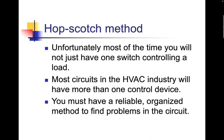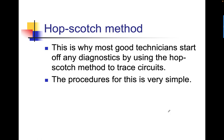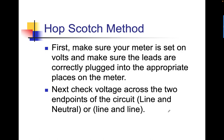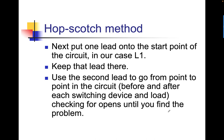Most of the time you'll not just have one switch controlling a load. Most circuits in the HVAC industry have more than one control device. You must have a reliable, organized method to find problems in the circuit. This is why most good technicians start off any diagnostic by using the hopscotch method to trace circuits. The procedure is very simple: make sure your meter is set to volts and the leads are correctly plugged in. Check the voltages across the two endpoints of the circuit — line and neutral, or line and line. Put one meter lead at the start point, in our case L1, and keep it there. Use the second lead to go from point to point in the circuit, before and after each switching device and the load, checking for opens until you find the problem.